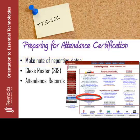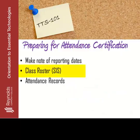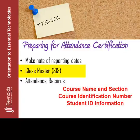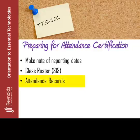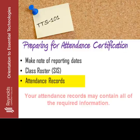To complete your reporting, you may also need to open the Student Information System and locate your class roster. This roster contains your course name and section, your course identification number, and the student ID information for all of your students. Additionally, if you track student attendance through Blackboard, or if your course is being taught online, you will also need to have your Blackboard course site open. Otherwise, be sure that you have your attendance records nearby so that you can complete the reporting accurately.